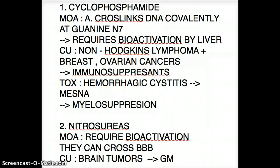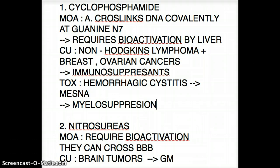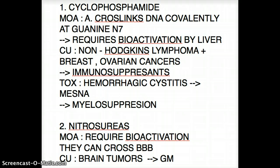So the full picture of cyclophosphamide: it covalently cross-links DNA at the guanine N7 site, it requires bioactivation by the liver, it's used for non-Hodgkin's lymphoma, breast and ovarian cancers, and immunosuppression. Toxicities include hemorrhagic cystitis — preventable with mesna — and myelosuppression.